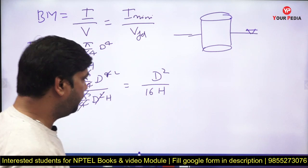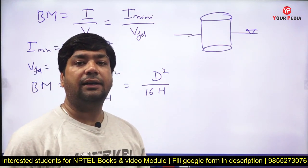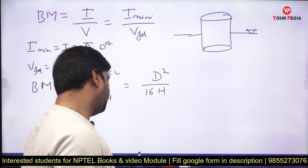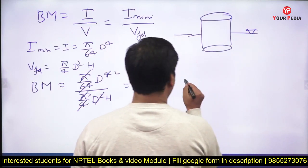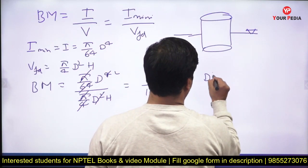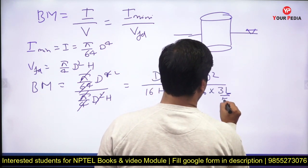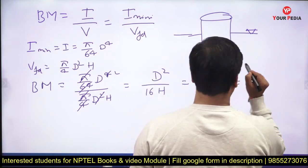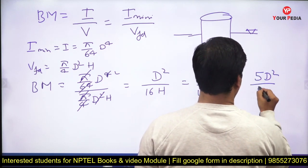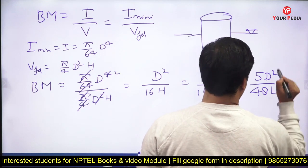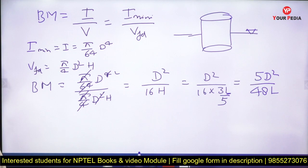We need to replace H with the relation we found, since the question asks in terms of L and D. Substituting H = 3L/5 into BM = D²/16H gives BM = D² / (16 × 3L/5) = 5D² / 48L. So BM = 5D²/48L.